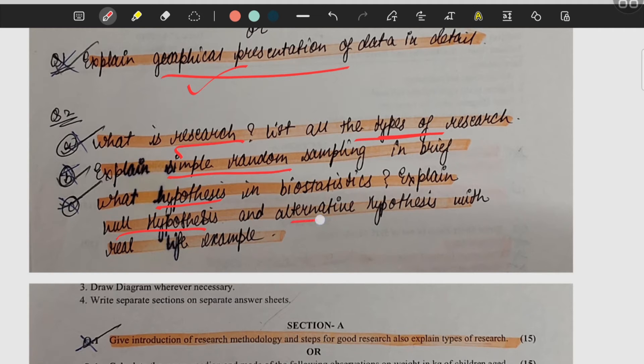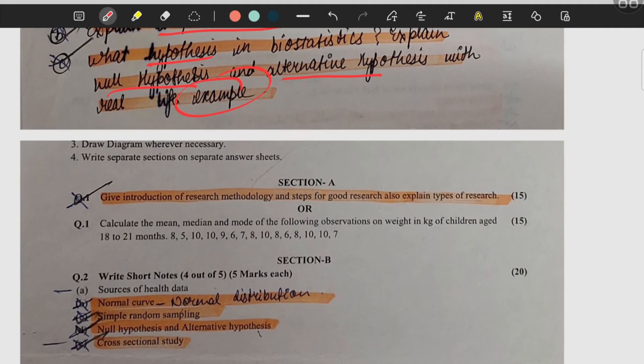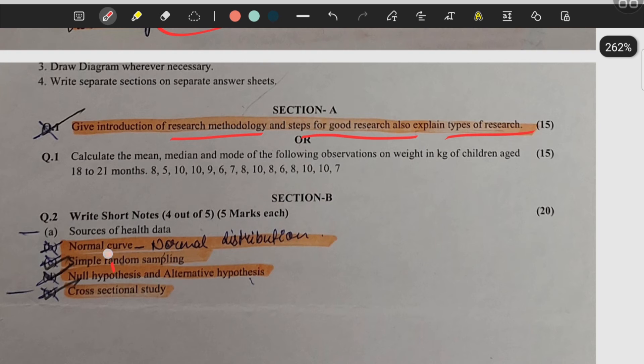What is hypothesis, what is null hypothesis, what is alternative hypothesis, what are steps for good research, what are types of research. Then what is normal curve, also known as normal distribution. Then what is simple random sampling.